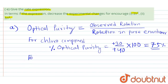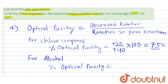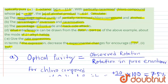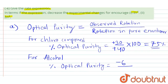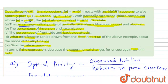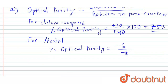Now let's determine the optical purity for the alcohol. The percentage optical purity of the alcohol equals the observed rotation in the alcohol, which is -6 degrees, divided by the rotation in the pure enantiomer, which is -12 degrees, multiplied by 100. That equals 50%.